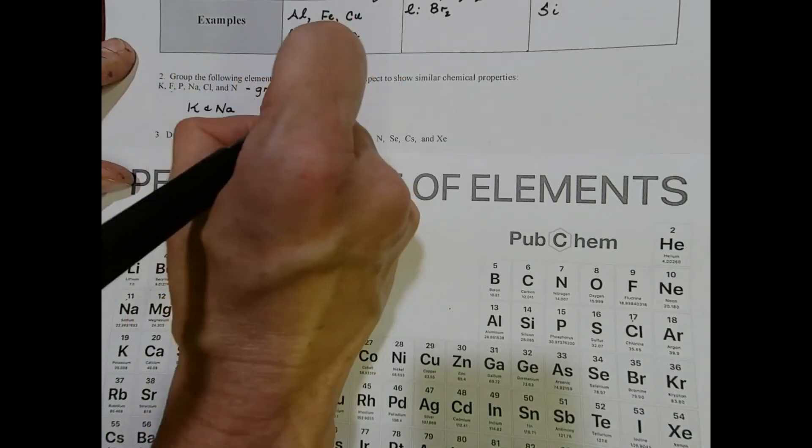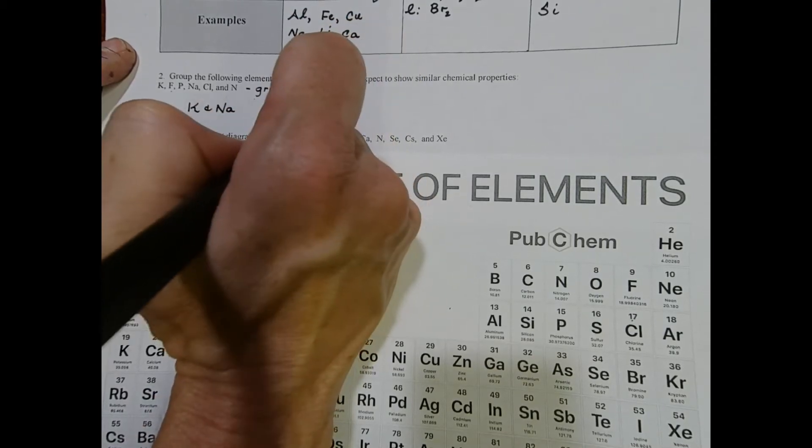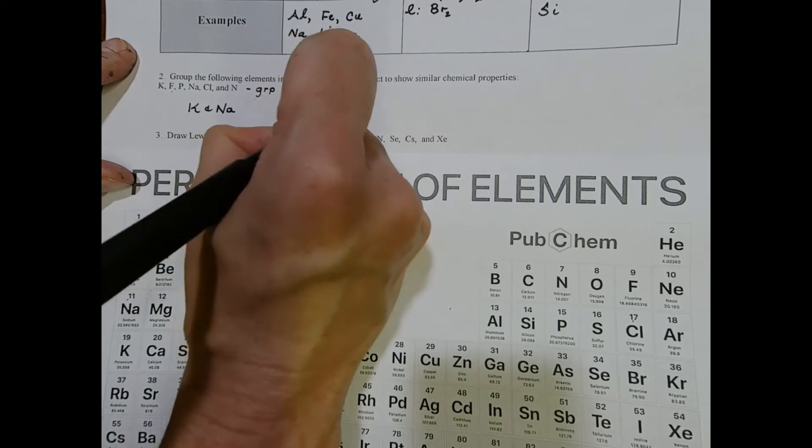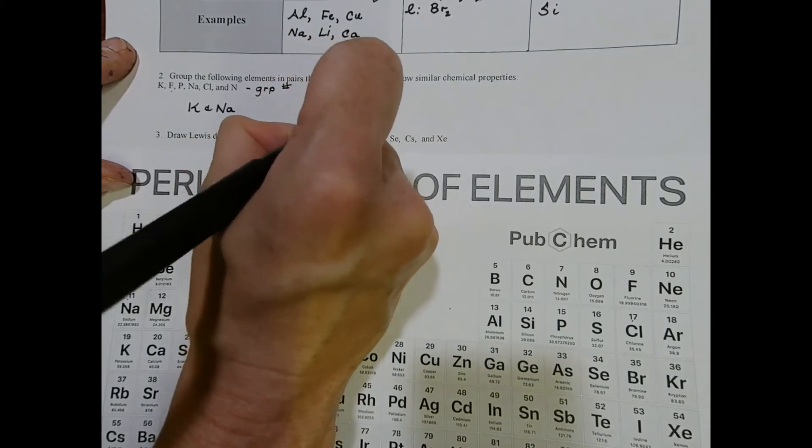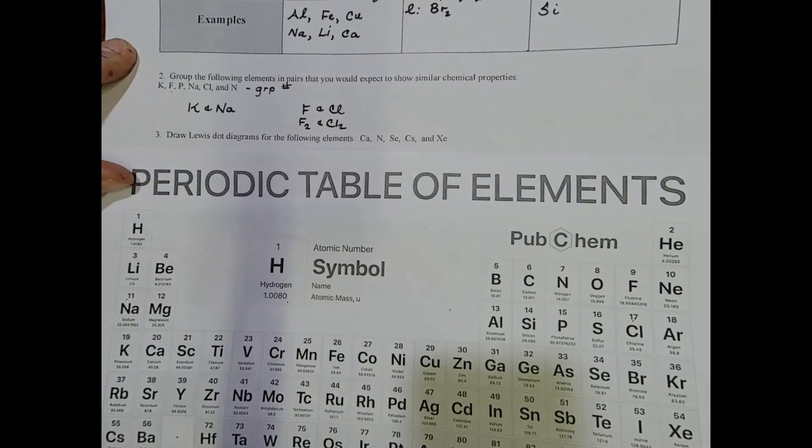Fluorine and chlorine are both in group seven, they're both halogens, they're both diatomic because everything in group seven exists naturally as a diatomic element, and they're also very reactive.